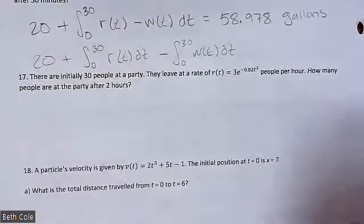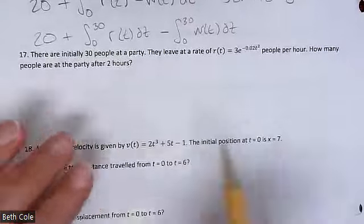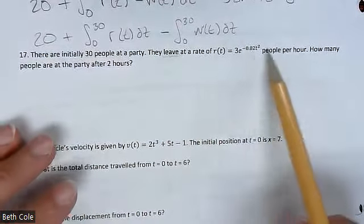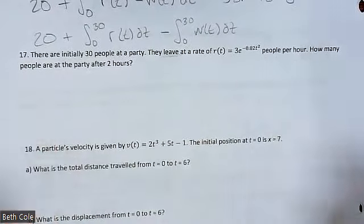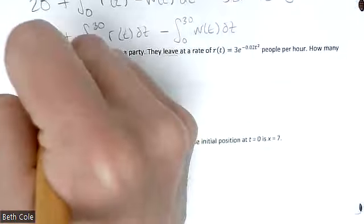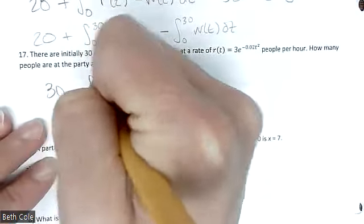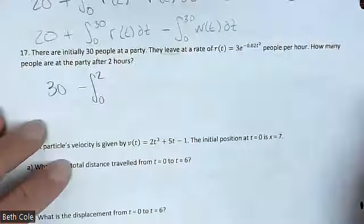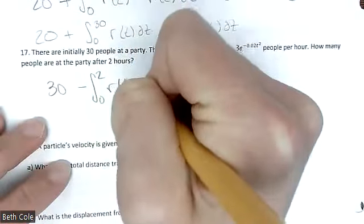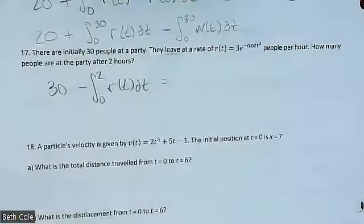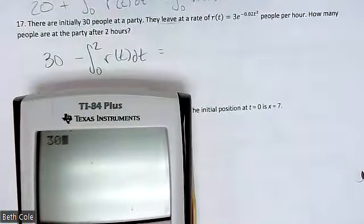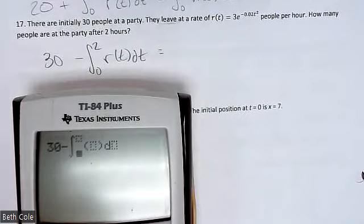Number 17: there are initially 30 people at a party; they leave at a rate of [given function] people per hour. How many people are at the party after two hours? We subtract: 30 minus the integral from 0 to 2 of r(t) dt. We are subtracting because they're leaving — you do not have to go home, but you cannot stay here.